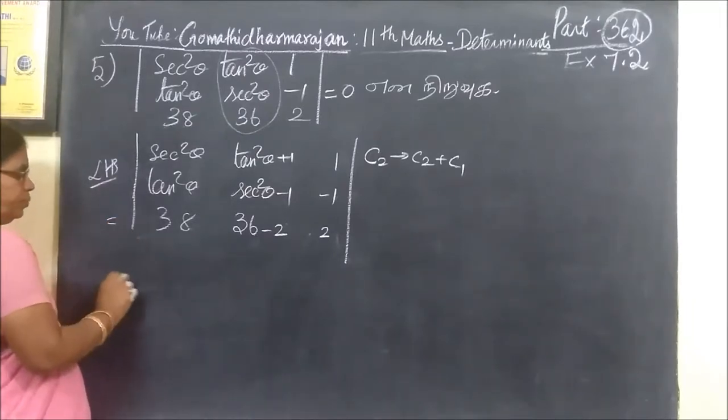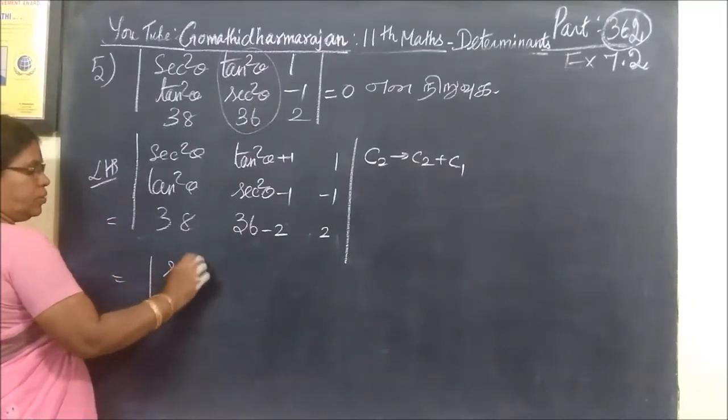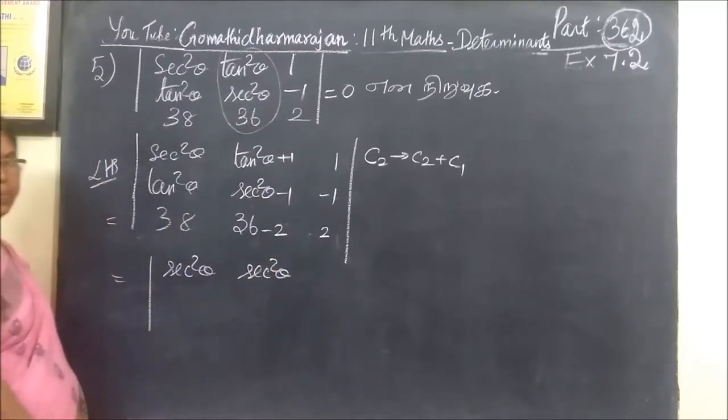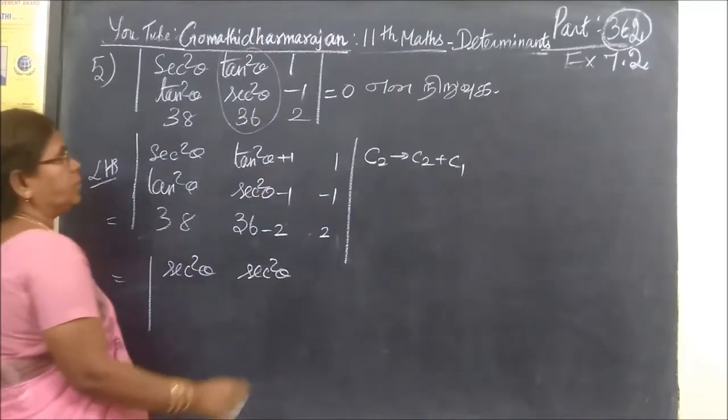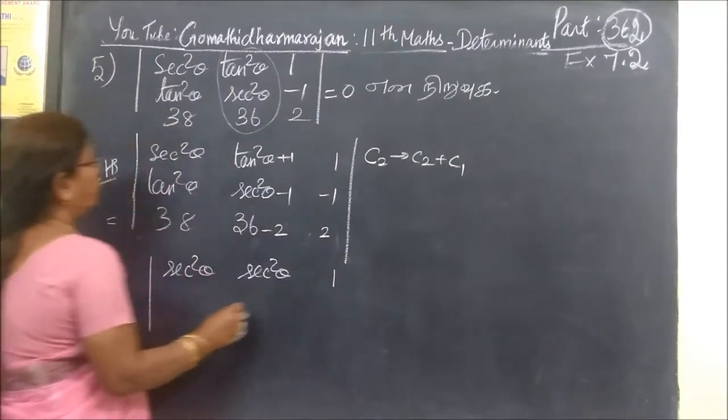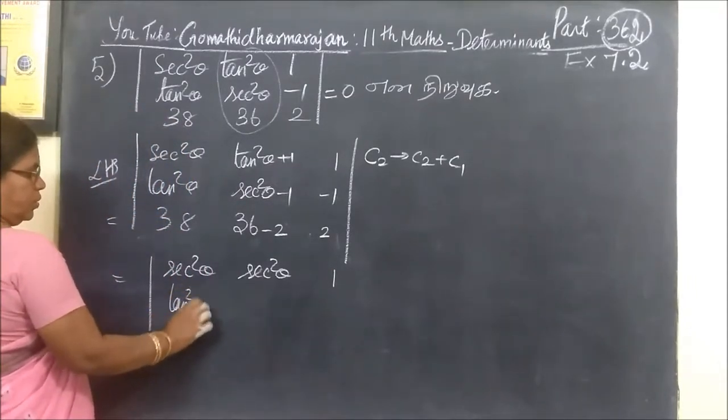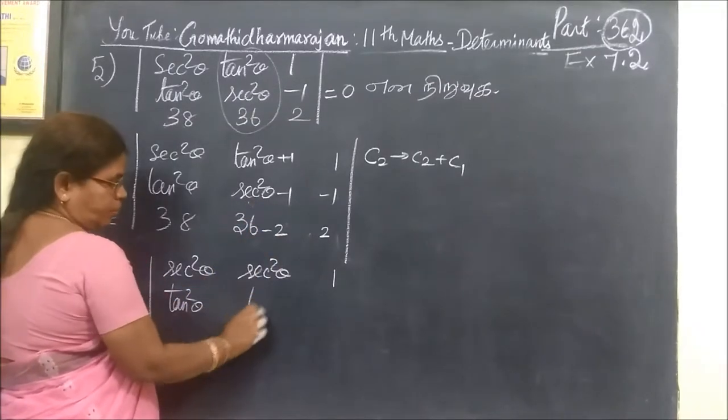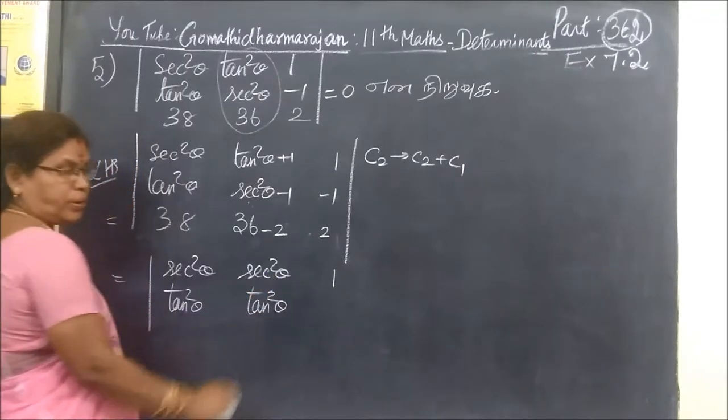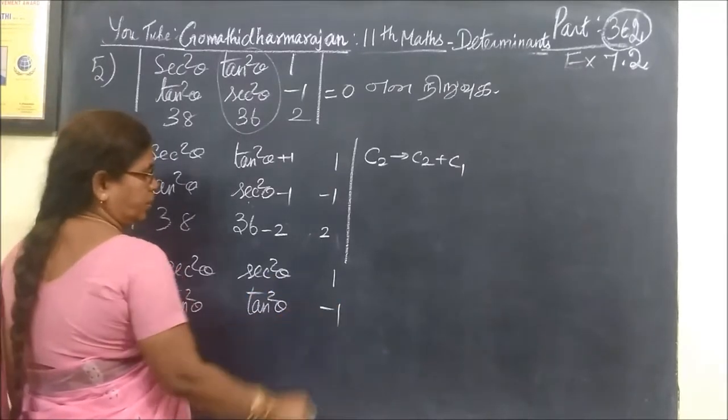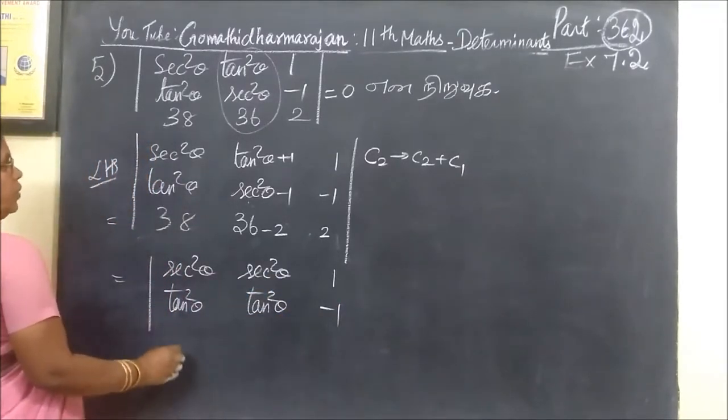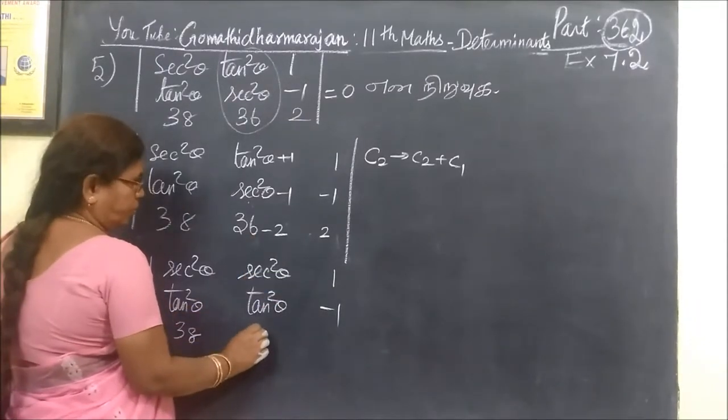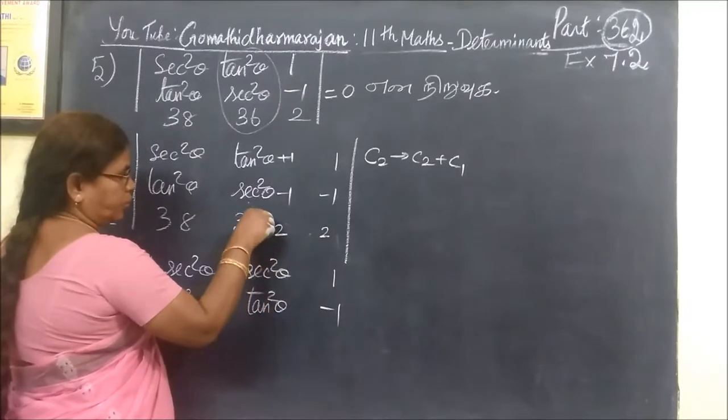So here you are writing 1 plus tan square theta. 1 plus tan square theta, then 1. Then tan square theta, then 3 square theta. Minus 1 tan square theta. That's when you get minus 1, then 38. That's my engine room. Add them for the room.